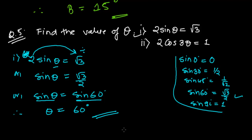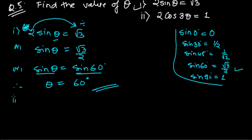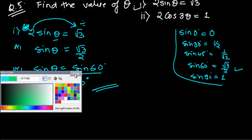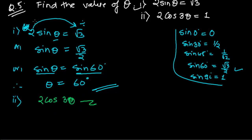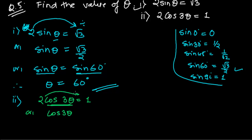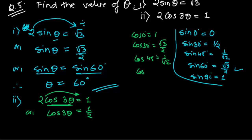Now let me do the other problem: 2 cos 3theta = 1. Moving the 2 to the right side gives cos 3theta = 1/2. Let me recall the cosine table: cos 0° = 1, cos 30° = √3/2, cos 45° = 1/√2, cos 60° = 1/2, and cos 90° = 0.